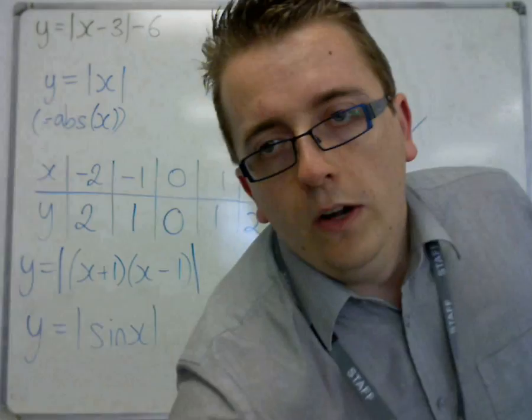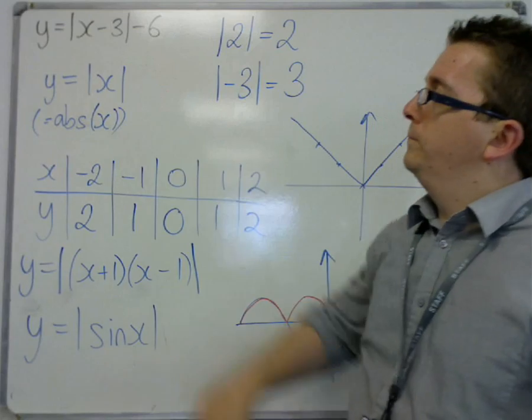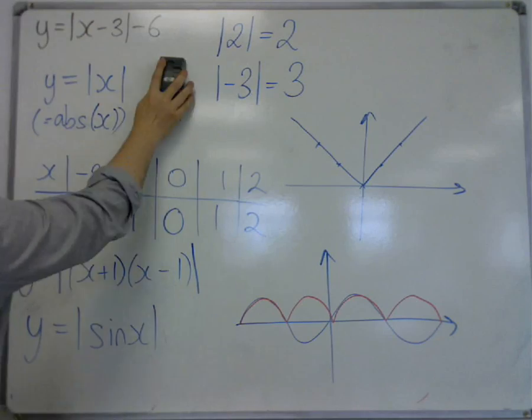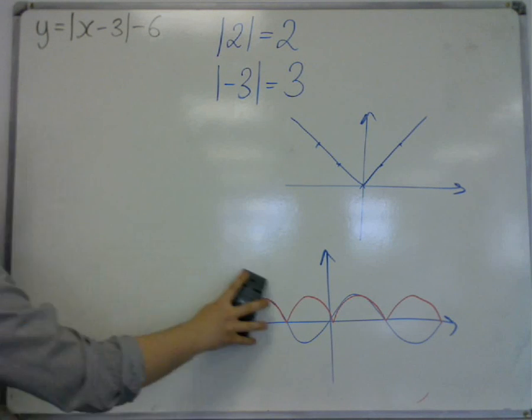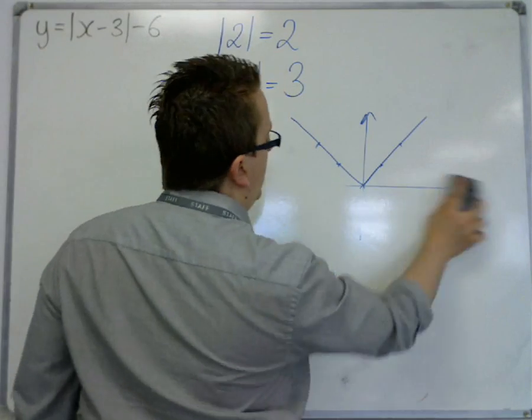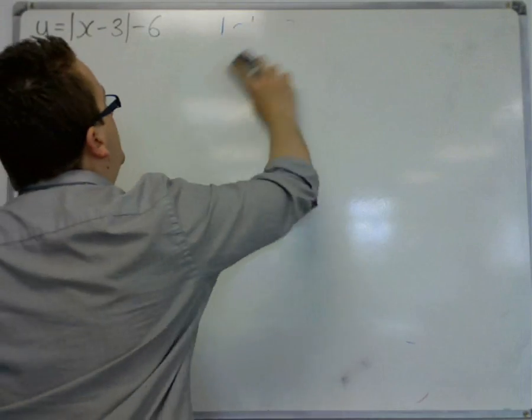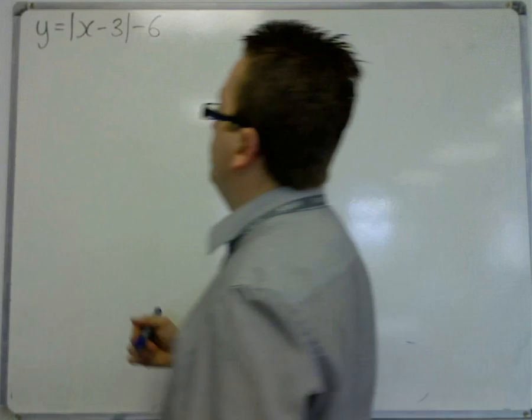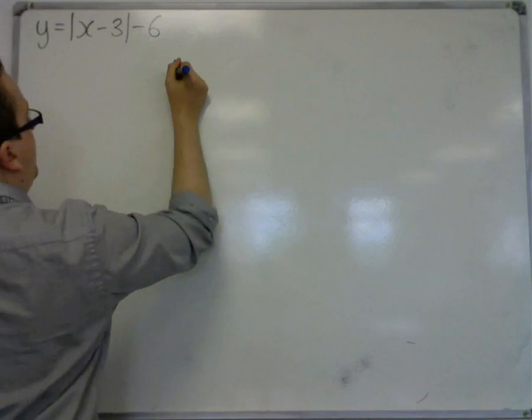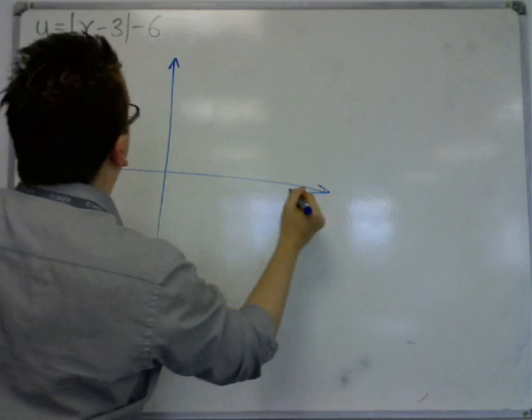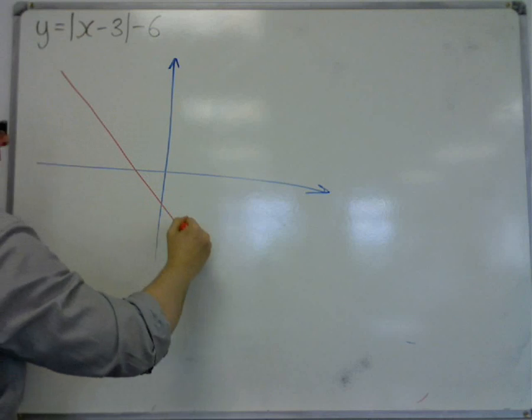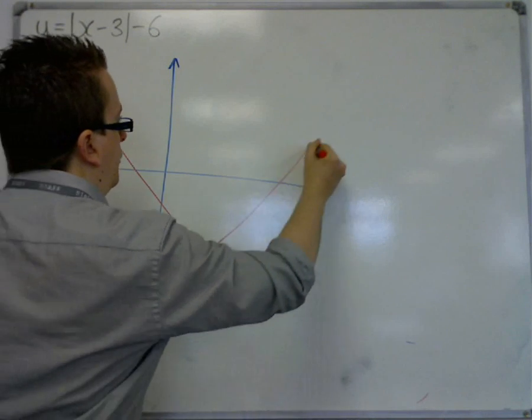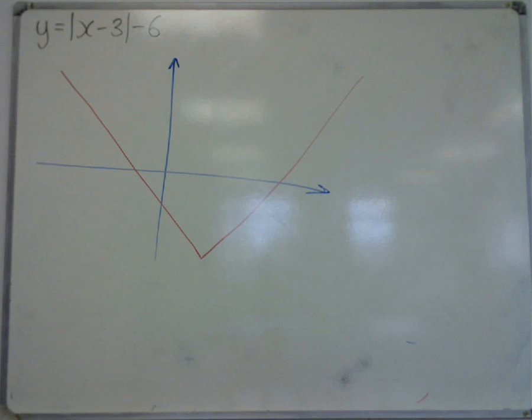So let's say I was asked to sketch this thing. y equals mod of (x - 3) - 6. And let's say also that I want to figure out exactly where it crosses the x and y-axis. Now, you could obviously plug this straight into a graphical calculator to help you. And if you did that, what you would find is something that looks like this.